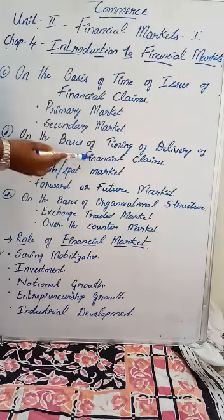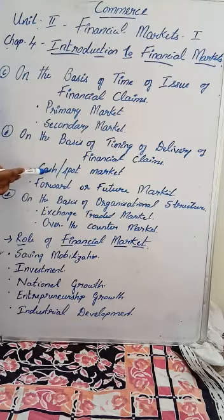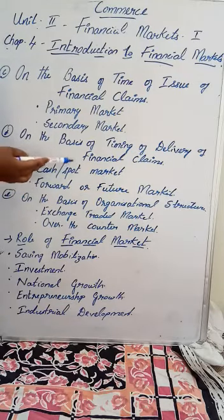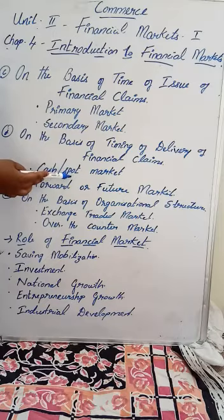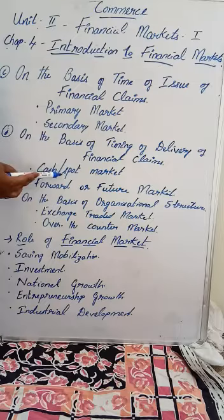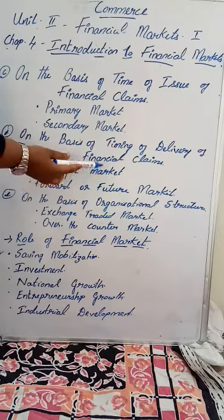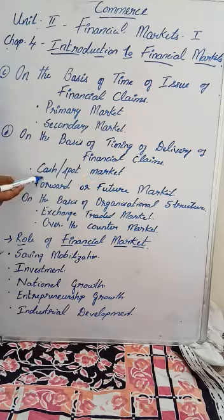The next type is based on the timing of delivery of financial claims. Here we have two types: one is the cash or spot market and the second is the forward or future market. The cash or spot market — as the name suggests — is a market where delivery of financial instruments and payment of cash occurs immediately, meaning settlement is completed right away.